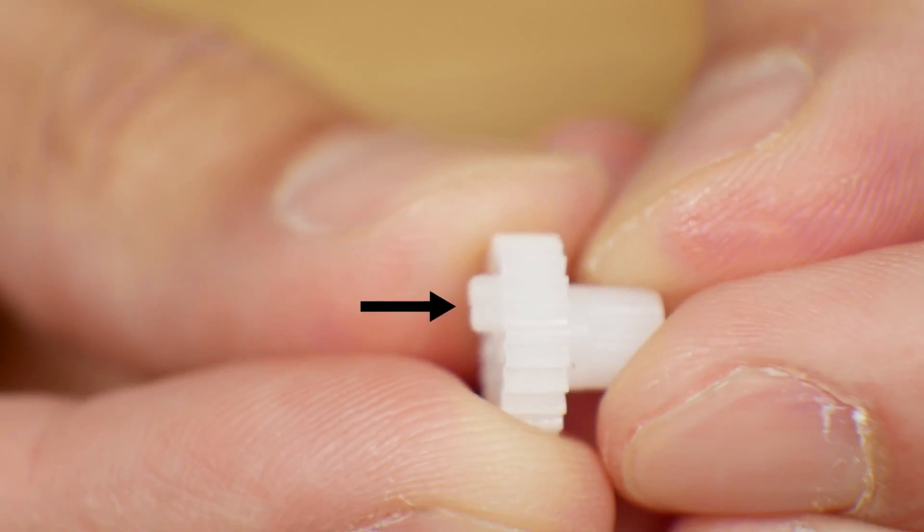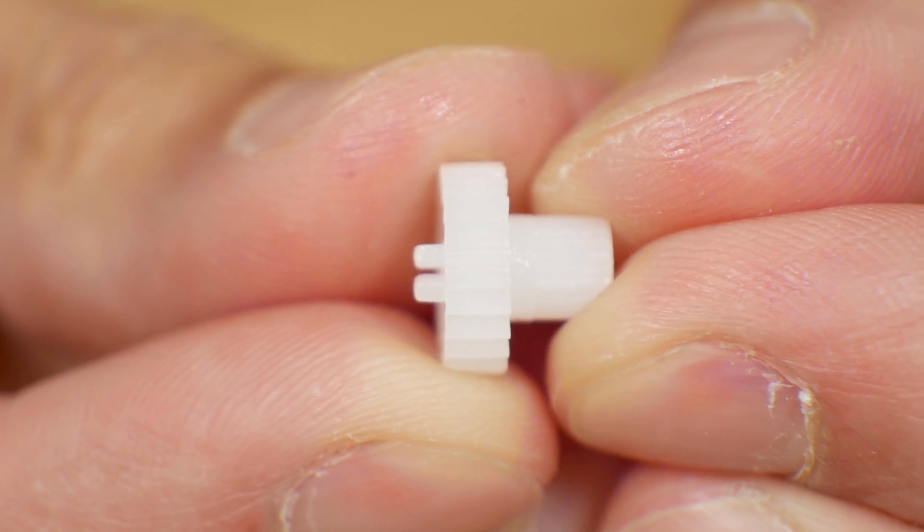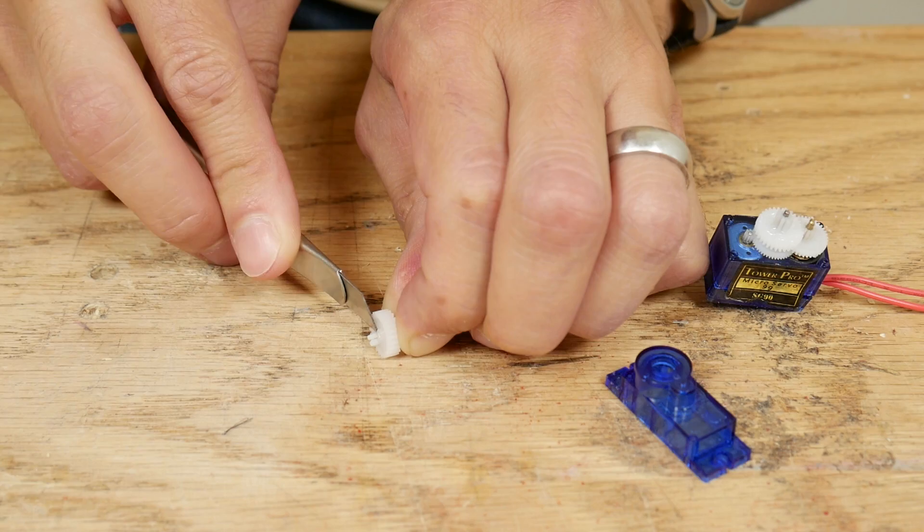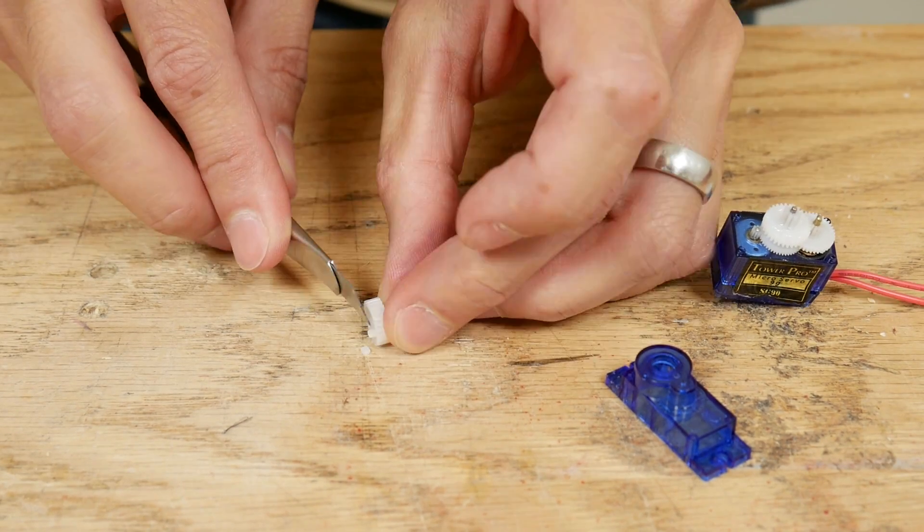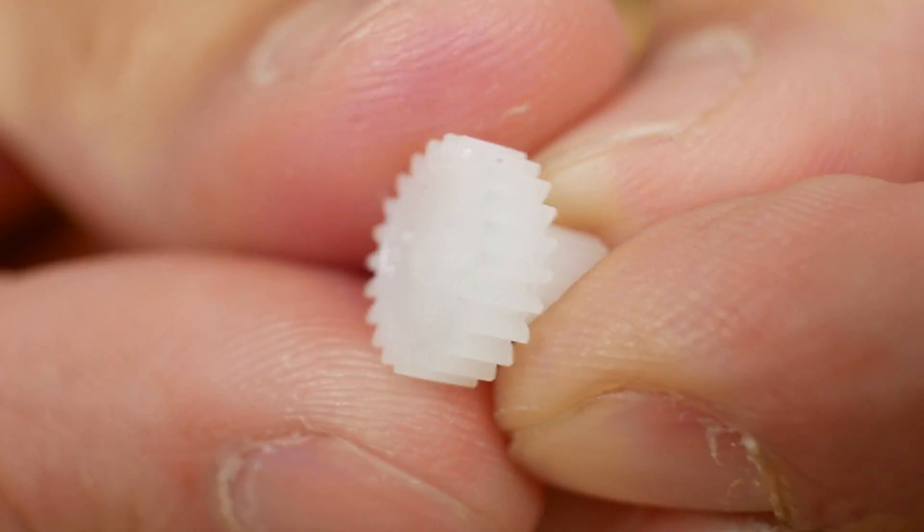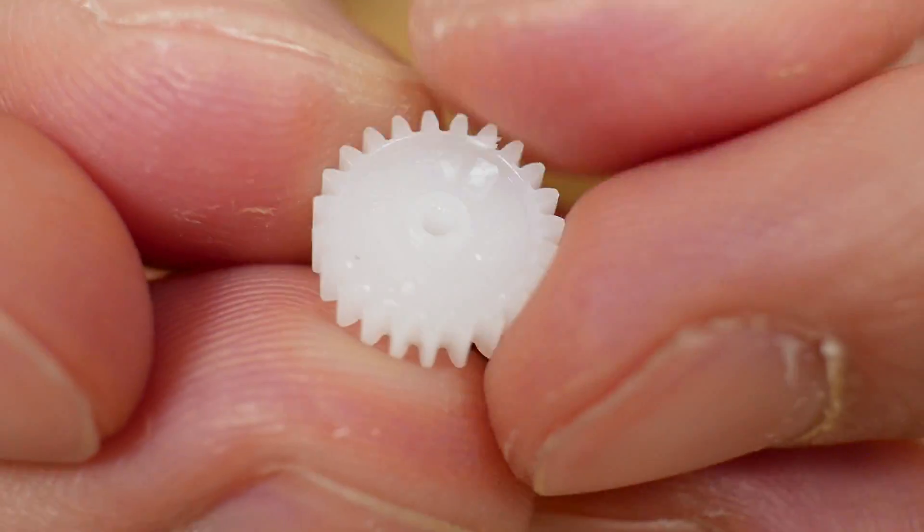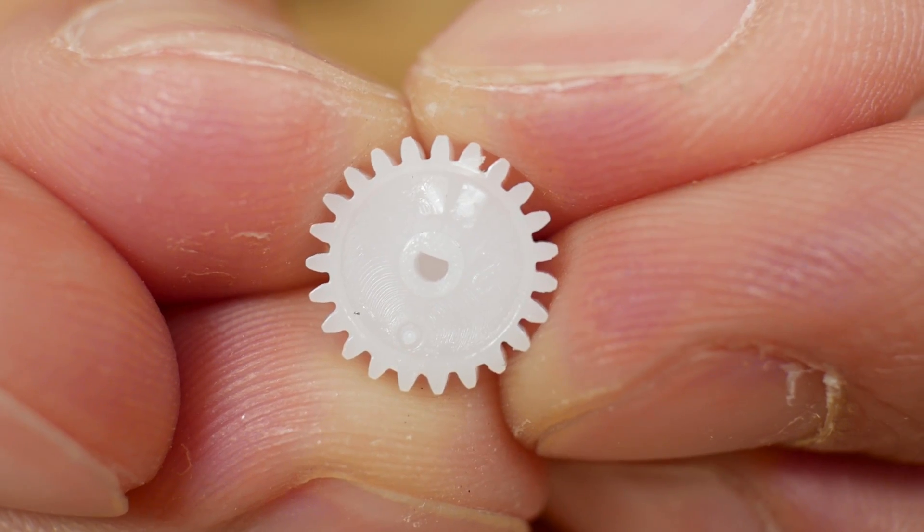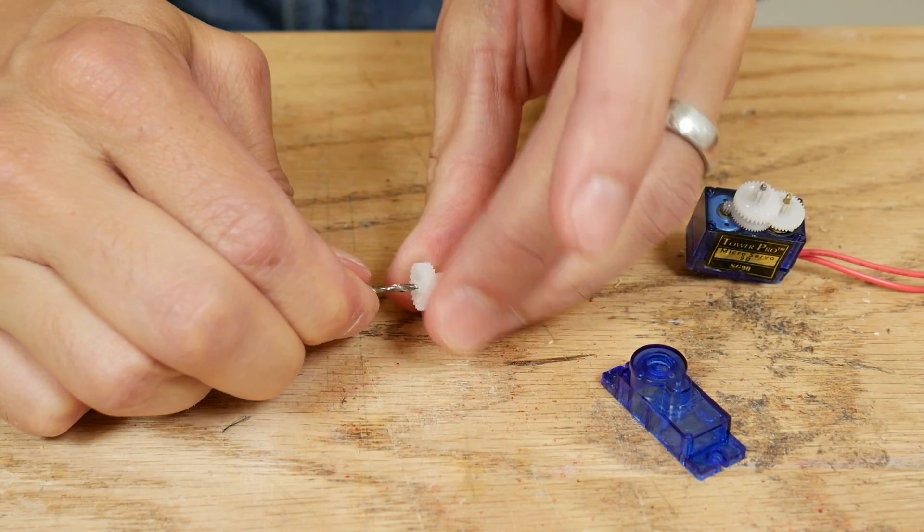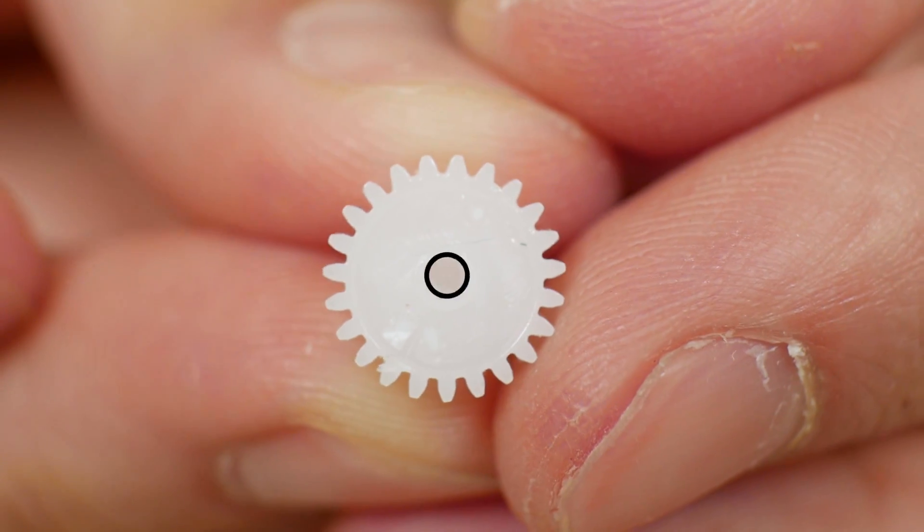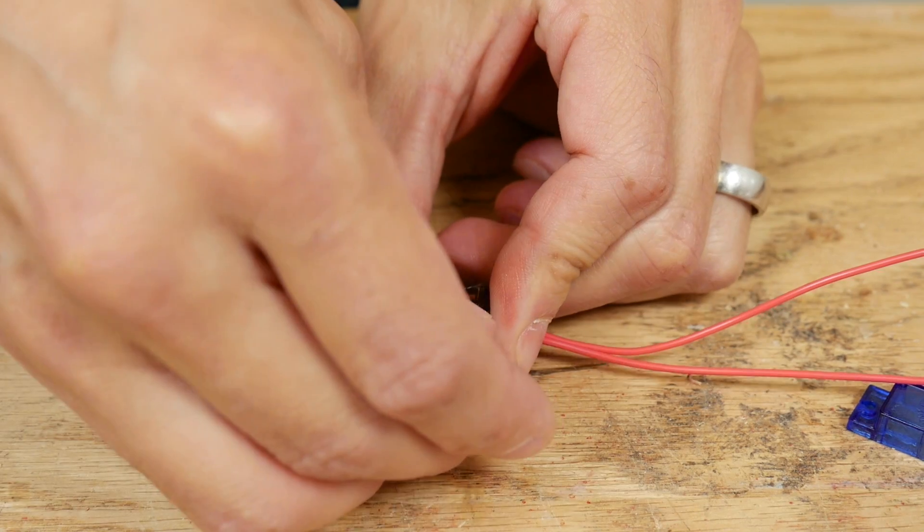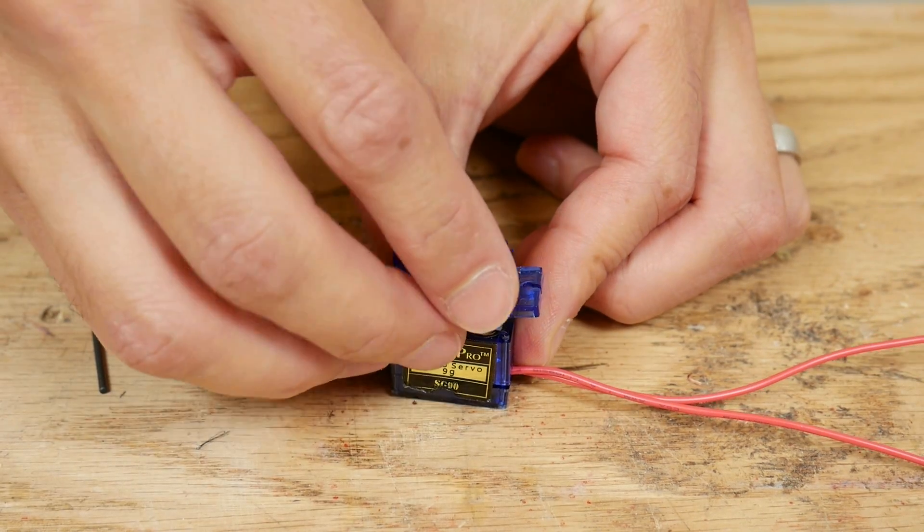There are two plastic tabs on this gear that prevent it from rotating a full 360 degrees. I cut those off with a knife. The hole in this gear is notched but I wanted it to spin freely so I used a small drill bit to make it completely circular. Then I put the gear back in place and put the covers back on the servo.